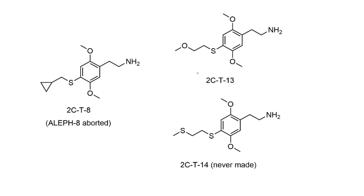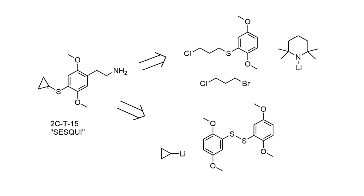Not much to say about the heteroatom-substituted ones, but for completeness: 2CT13 and 2CT14 bear a methoxy and a thiomethyl group respectively; one was proposed but never made. 2CT8 features a cyclopropylmethyl group, and by the time Shulgin was making this, the Aleph series appears to have been abandoned so Aleph-8 wasn't completed. Another cyclopropyl derivative, 2CT15 — otherwise known as Sesqui — requires a different synthetic route. The first approach involves alkylation of the common thiophenol intermediate with 1-bromo-3-chloropropane, with the first alkylation occurring at bromine. With the appropriate choice of base, the sulfur is deprotonated at the alpha position, causing intramolecular displacement of the chloride to form the cyclopropane ring. The choice of base was critical: lithium tetramethylpiperidide was the base of choice, as other bases led to elimination of hydrogen chloride rather than ring closure.